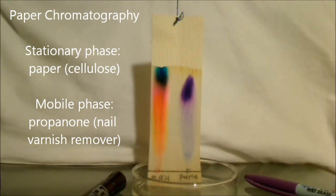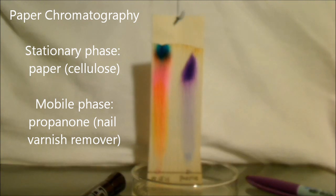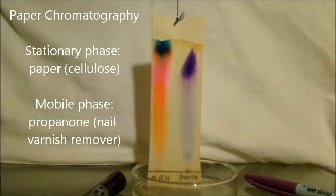So looking at the purple ink, that prefers to be dissolved in the mobile phase, so it's going up quite high. The orange component of the black ink, well that's not moving up very much at all compared to the others, so that one would rather be in the stationary phase.